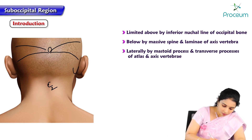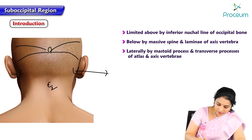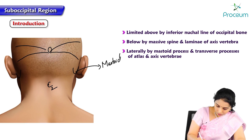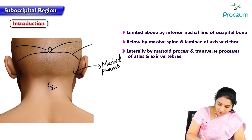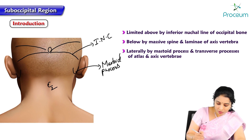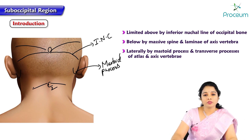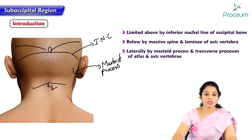The mastoid process is located posterior to the ear. So superiorly by the inferior nuchal line, inferiorly by the lamina of C2 on each side, and laterally by the mastoid process and transverse process of atlas and axis as well. These are the boundaries of the suboccipital region.